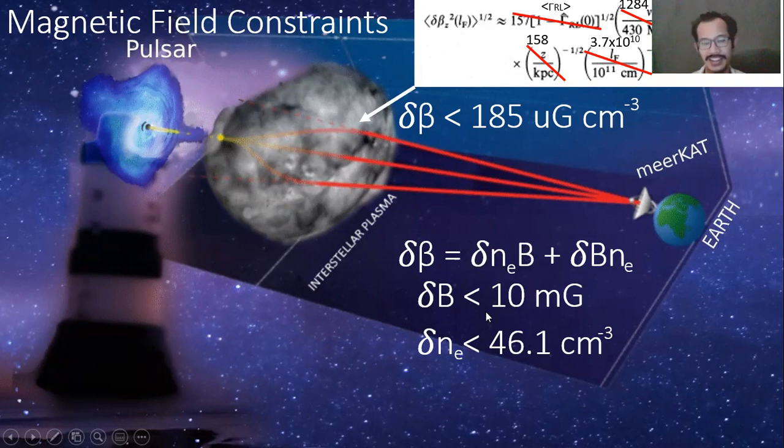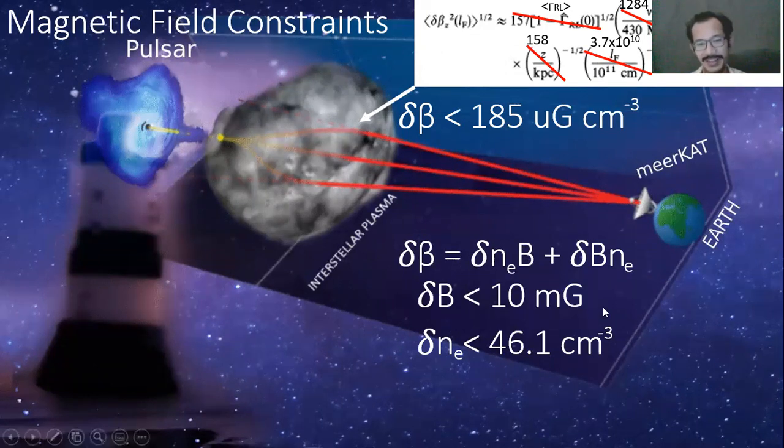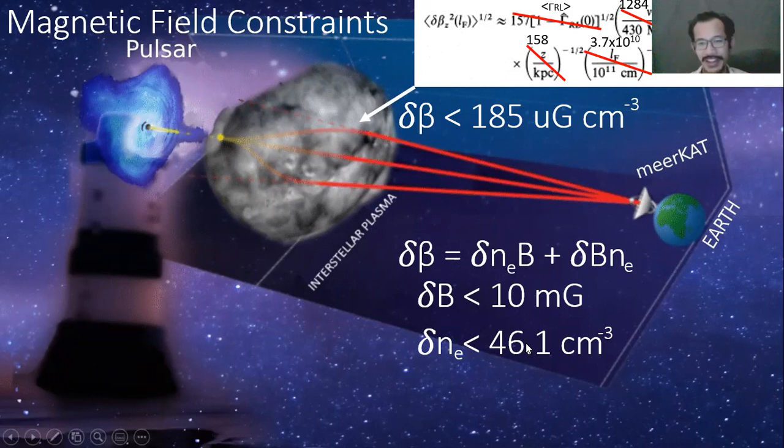which is on the same level as an overdensity within the interstellar medium because there are these things called extreme scattering events where there's just an overdense clump of plasma moving across the line of sight. And those are usually hundreds of thermal electrons per centimeter cube. And we got 46.1. So it's almost on the same level of an overdensity as an upper limit. So our upper limits are a bit uninformative towards 0437.